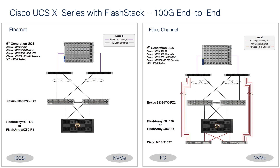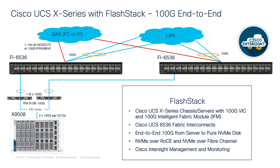The FI provides the management and communication backbone for the Cisco UCS X-Series Compute Nodes, UCS X9508 X-Series Chassis, UCS B-Series Blade Servers, UCS 5108 B-Series Server Chassis, and UCS C-Series Rack Servers. Cisco UCS 9108 Intelligent Fabric Modules connect the I/O Fabric between the 6536 FI and the Cisco UCS X9508 Chassis.